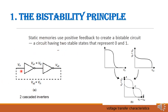For example, consider two inverters connected in a cascaded manner. VI1 is the input to the first inverter and VO1 is the output of the first inverter. This is given as input to the second inverter, that is VI2, so V1 is equal to VI2. VO2 is the output of the second inverter, and this VO2 is fed back to the input of the first inverter VI1. Therefore, VO2 is equal to VI1.